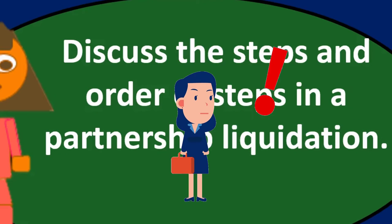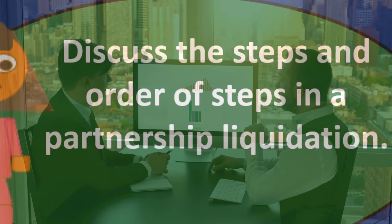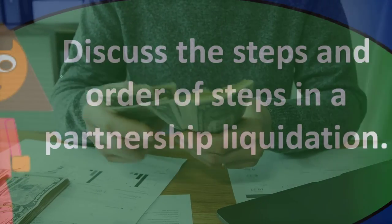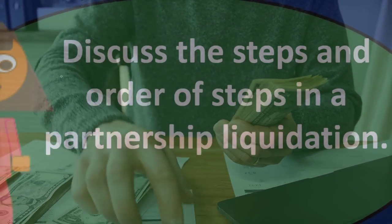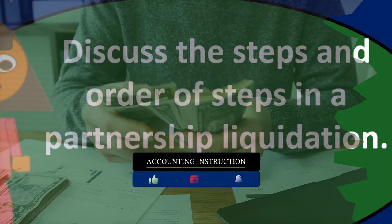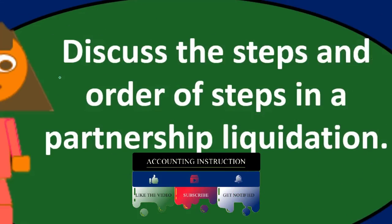If there are no negative capital accounts — which is the simpler and more typical scenario — the process is straightforward. We sell all the assets and get cash, allocate any gain or loss to the partners' capital accounts, pay off all the liabilities, and then distribute the remaining amounts to the partners based on their capital account balances.